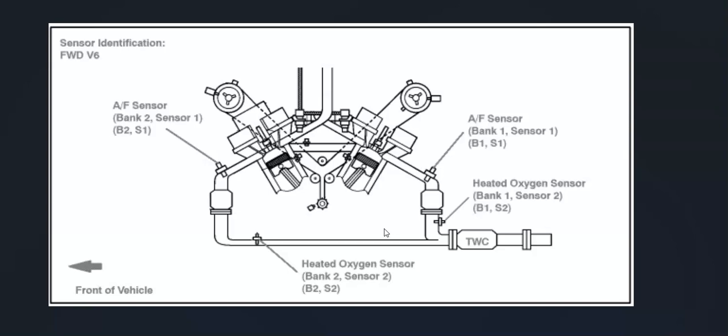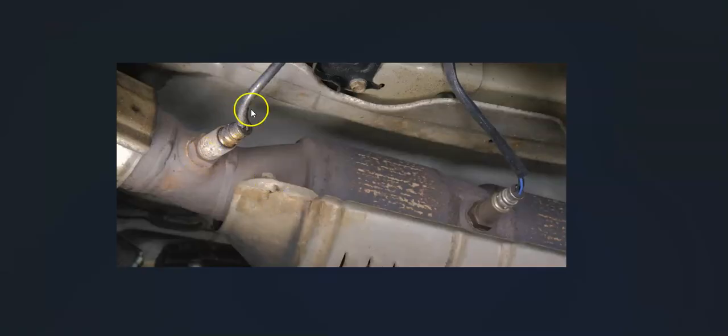For example this is a 2007 Camry with the 3.5 liter V6. As you can see bank 2 sensor 2 is right here and it'll be located after the catalytic converter. Sensor 1 is going to be called the upstream oxygen sensor and it's located before the catalytic converter. Sensor 2 is called the downstream oxygen sensor and it's located after the catalytic converter.